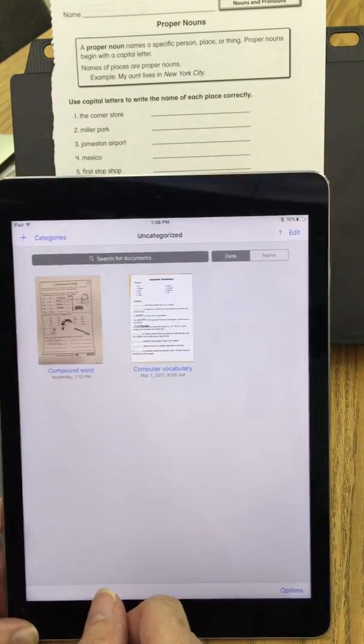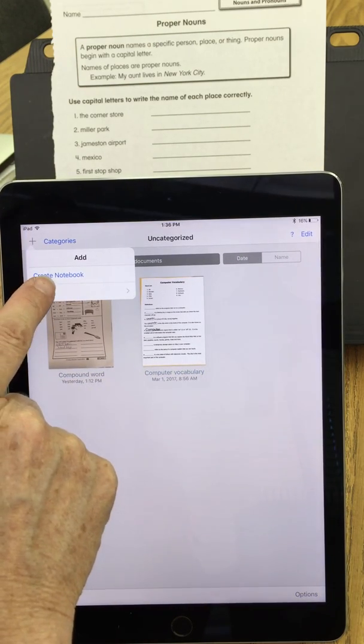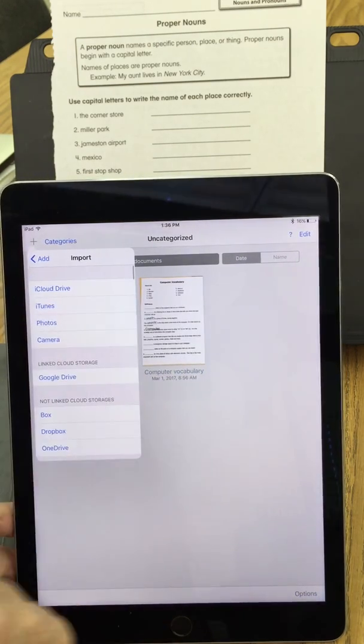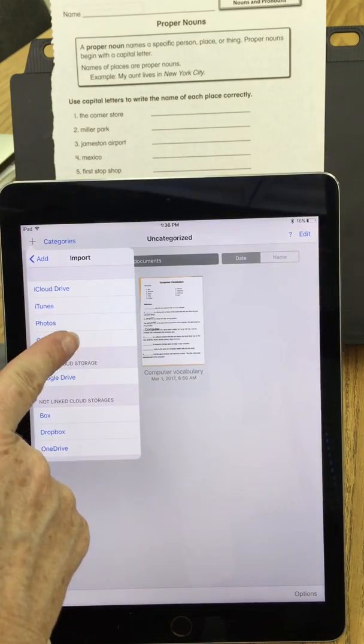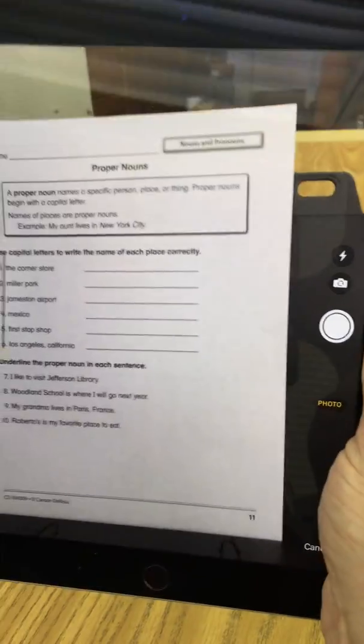So I'm going to open the app and hit the plus button to add a new document, and I have an import option. When I tap that, I get an option to go to the camera, and I will do that just from the app here.